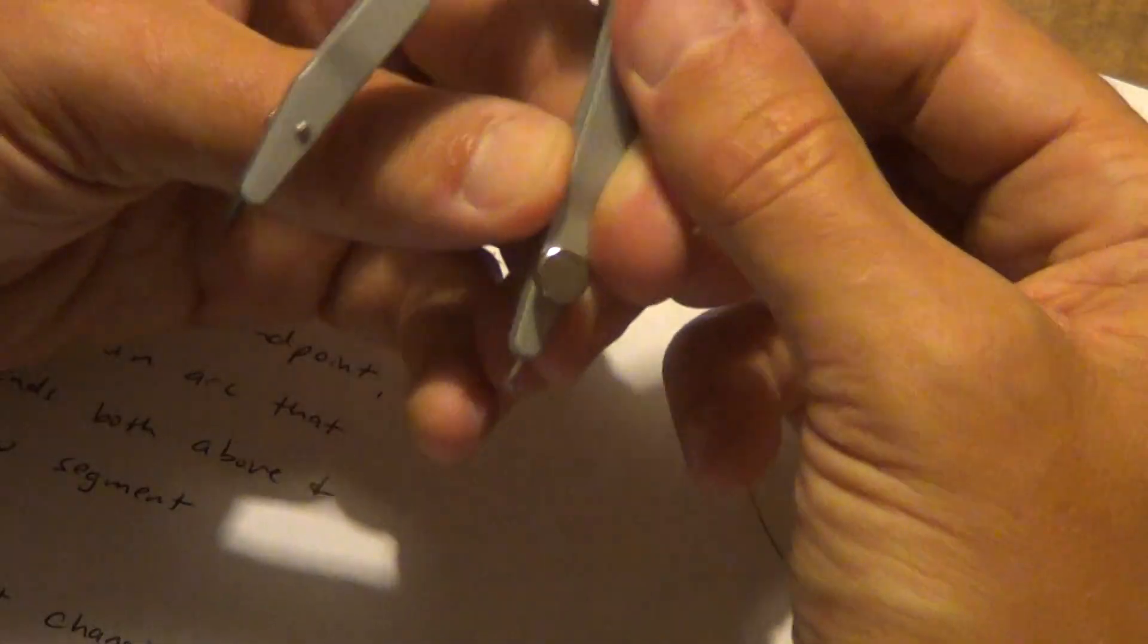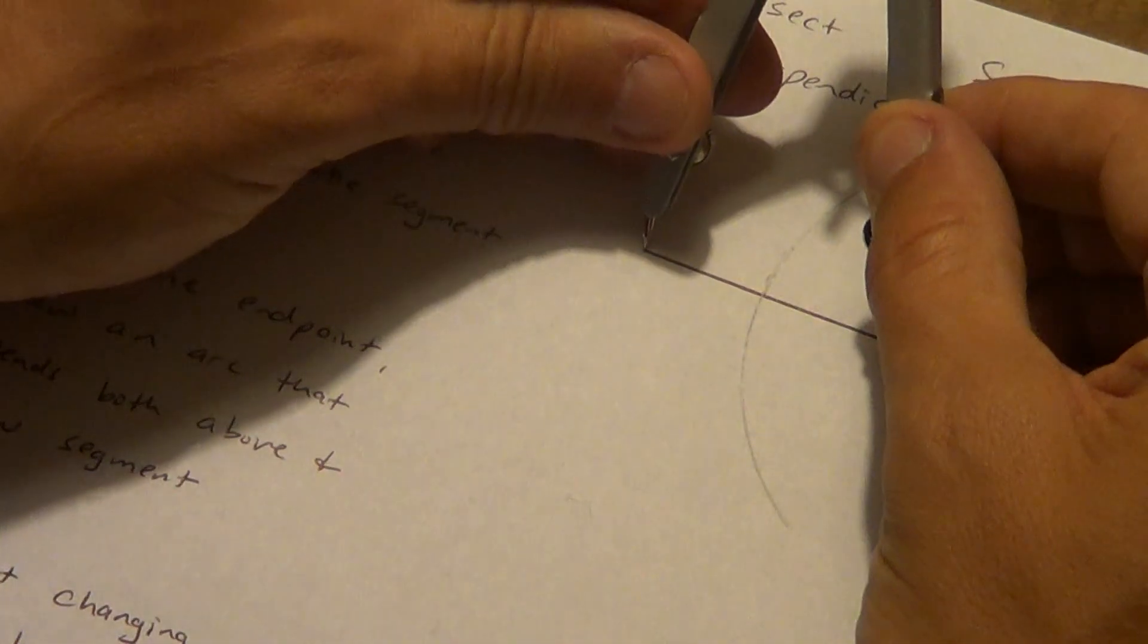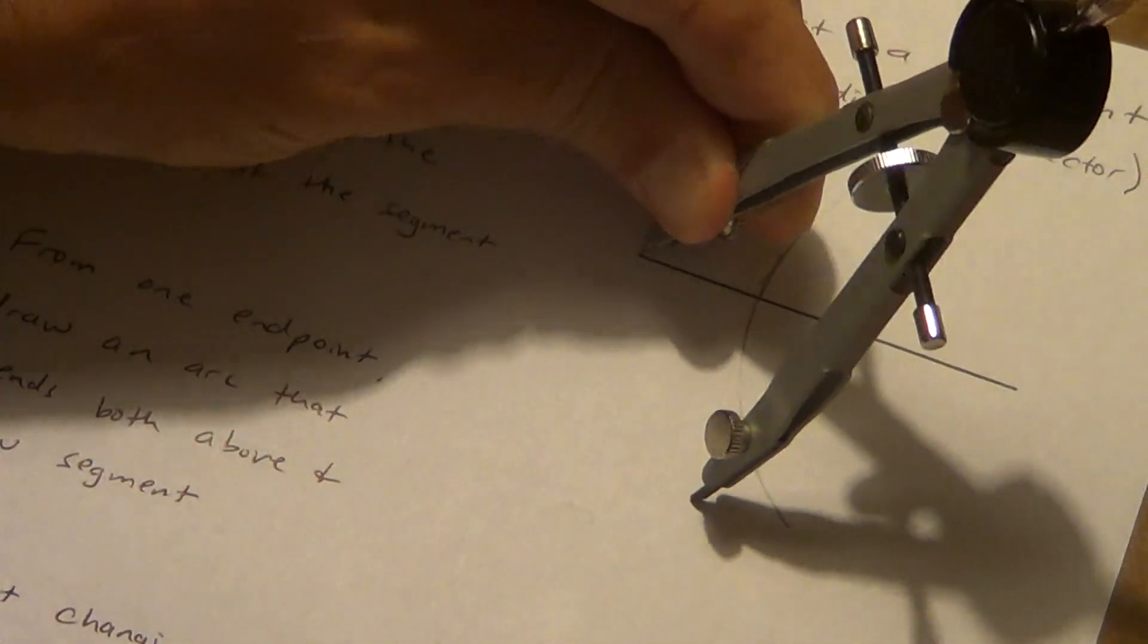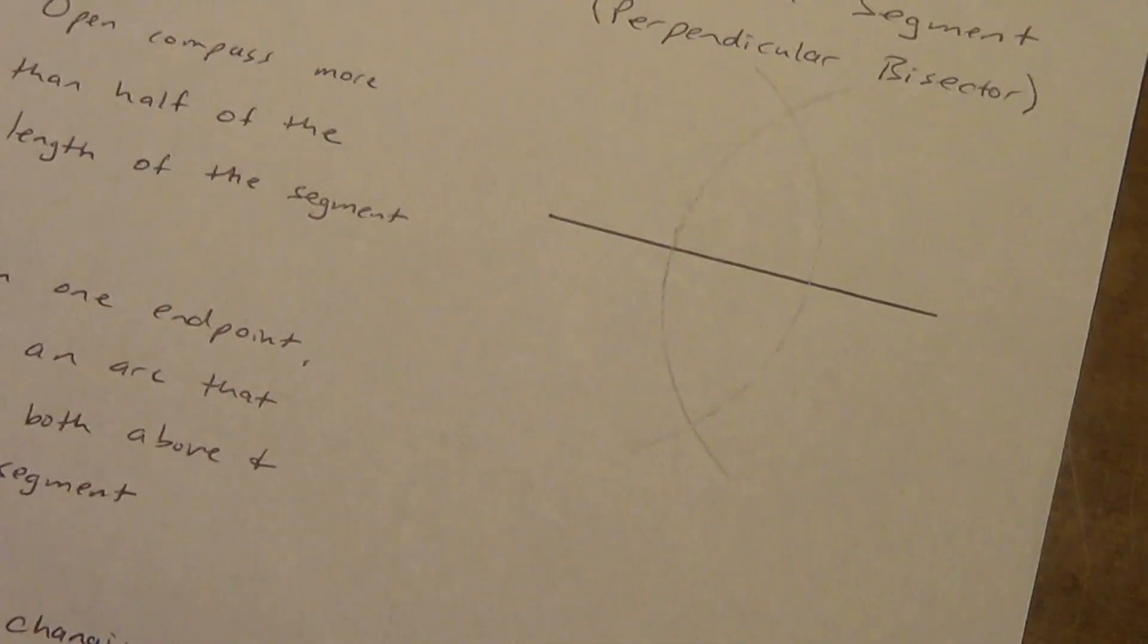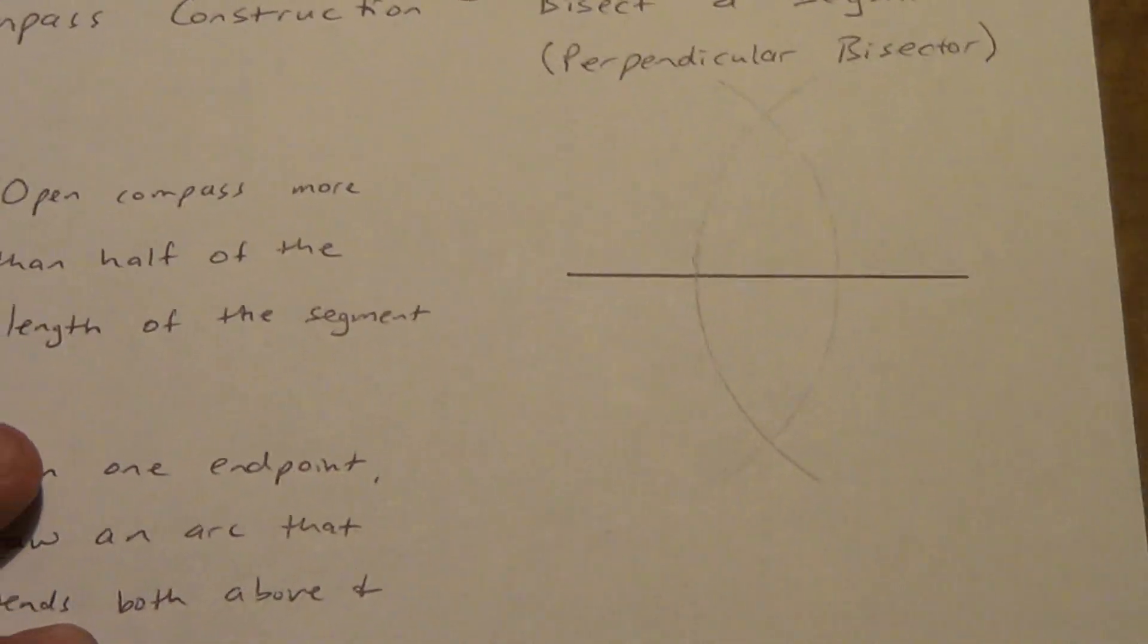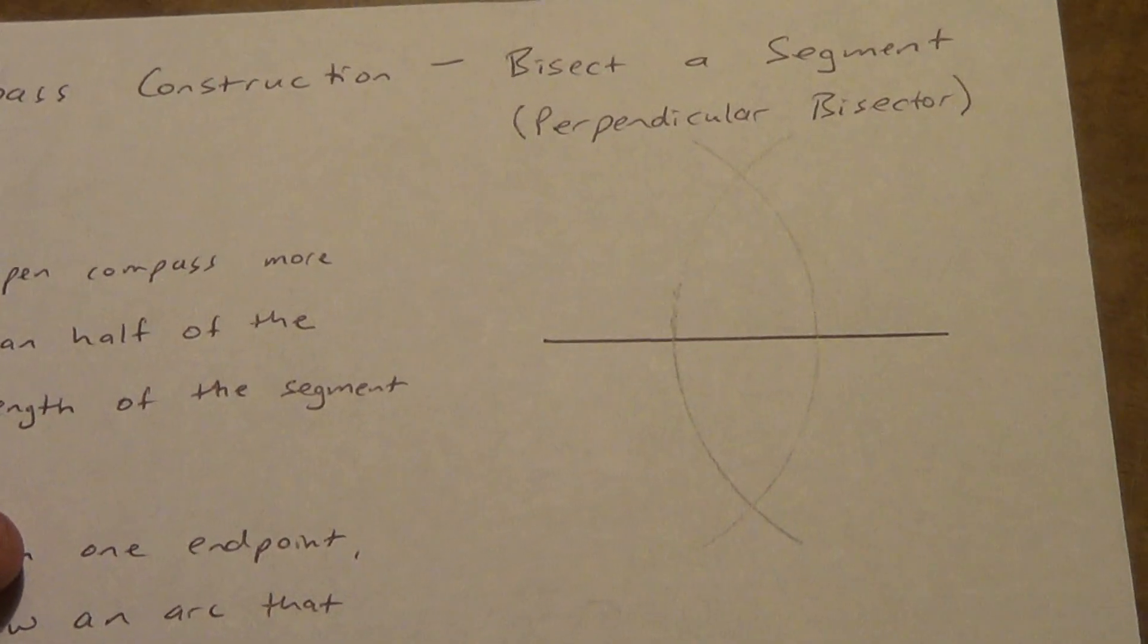So get my pivot point. I'm going to draw an arc that goes both above and below the segment. I'm going to zoom in on that so you can kind of see it a little bit better. Hopefully that pencil will show up a little bit darker as I zoom in.